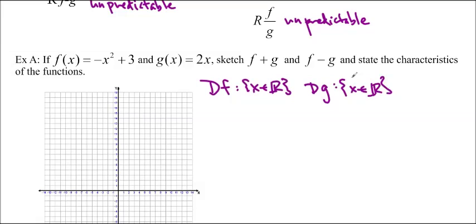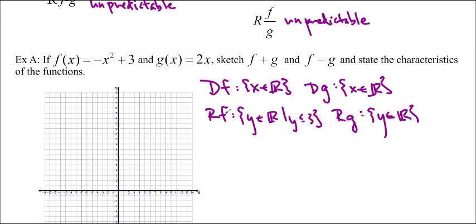That means we're going to be totally free all the way across the x values. The range of f is y in R, such that y is less than or equal to 3. It is a parabola. And the range of g is y in R. Now, if you thought that the range was going to be affected by the original ranges, then we might think that this 3 might be involved. But actually, if we find the function, we'll see that that is not at all true.